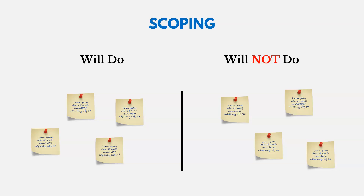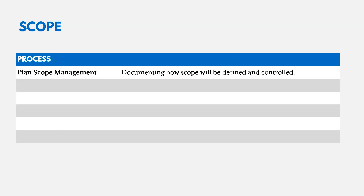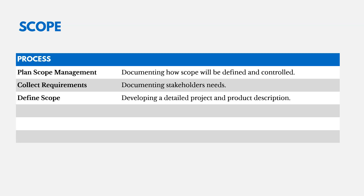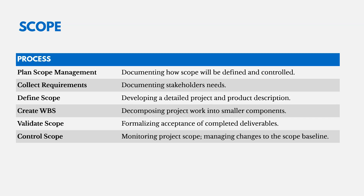The next knowledge area is scope management, where we define what the project will and won't do — setting boundaries. There are six processes: four in planning and two in monitoring and controlling. We plan scope management, collect requirements from stakeholders, define scope with a detailed project and product description, and create the WBS — the work breakdown structure, breaking the scope into smaller manageable pieces. Then we validate scope by seeking formal acceptance on completed deliverables, and control scope by monitoring and managing changes to the scope baseline.